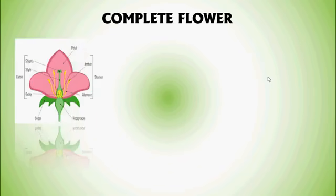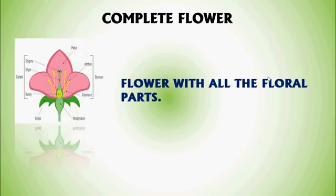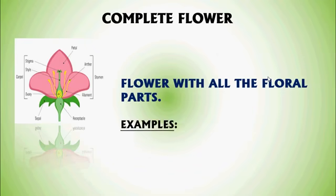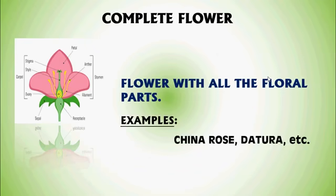Complete flower — a flower with all floral parts such as Calyx, Corolla, Androecium, and Gynoecium is called a complete flower. Examples: China Rose or Hibiscus, Datura, etc.